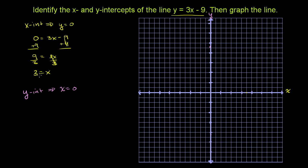We get 3 is equal to x, or x is equal to 3. So the point y is equal to 0, x is equal to 3 is on this line. X-coordinate always goes first. So it's 3 comma 0.